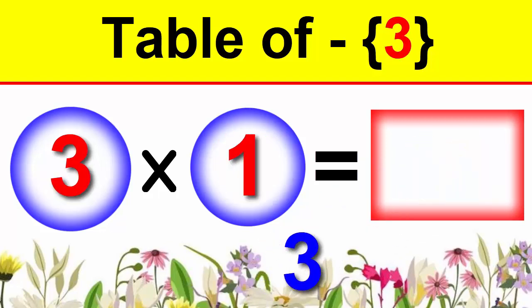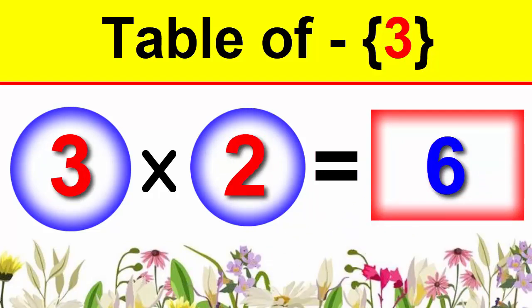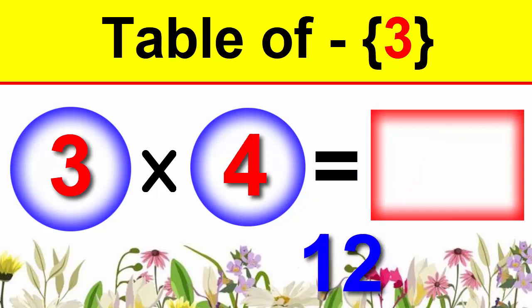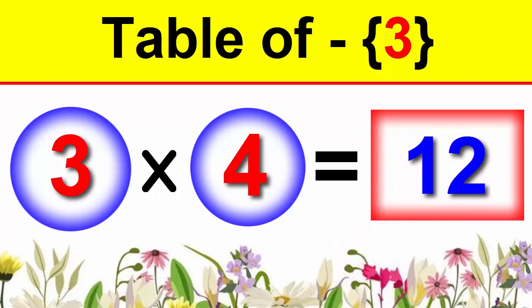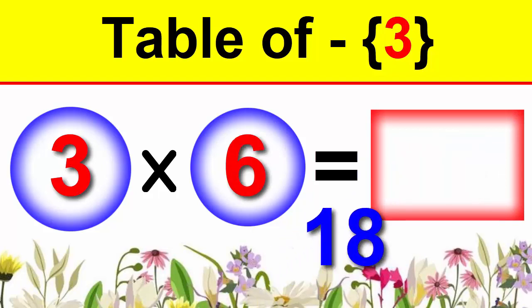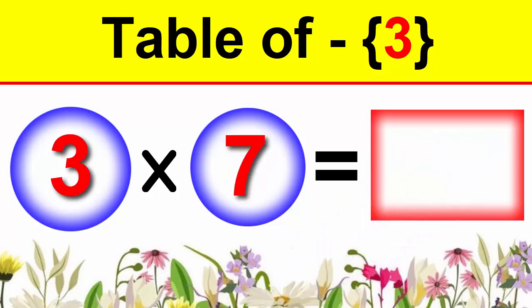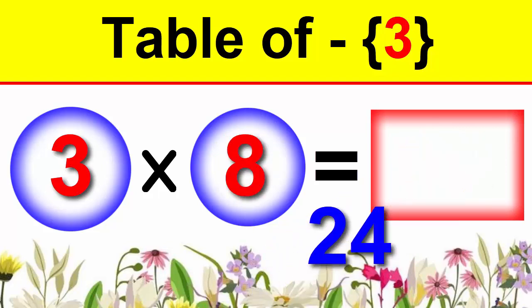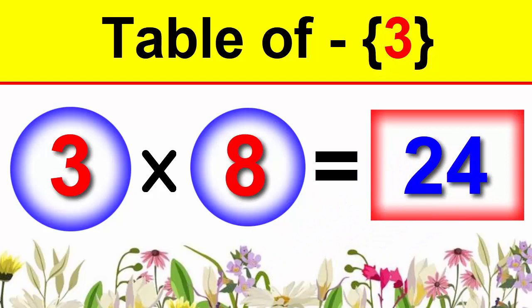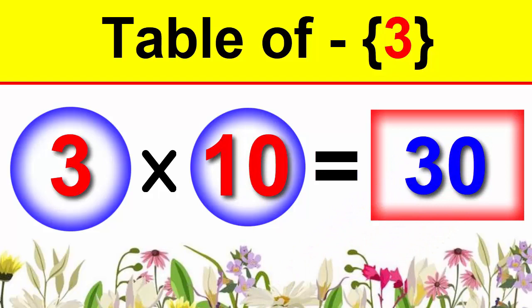3×1 is 3, 3×2 is 6, 3×3 is 9, 3×4 is 12, 3×5 is 15, 3×6 is 18, 3×7 is 21, 3×8 is 24, 3×9 is 27, 3×10 is 30.